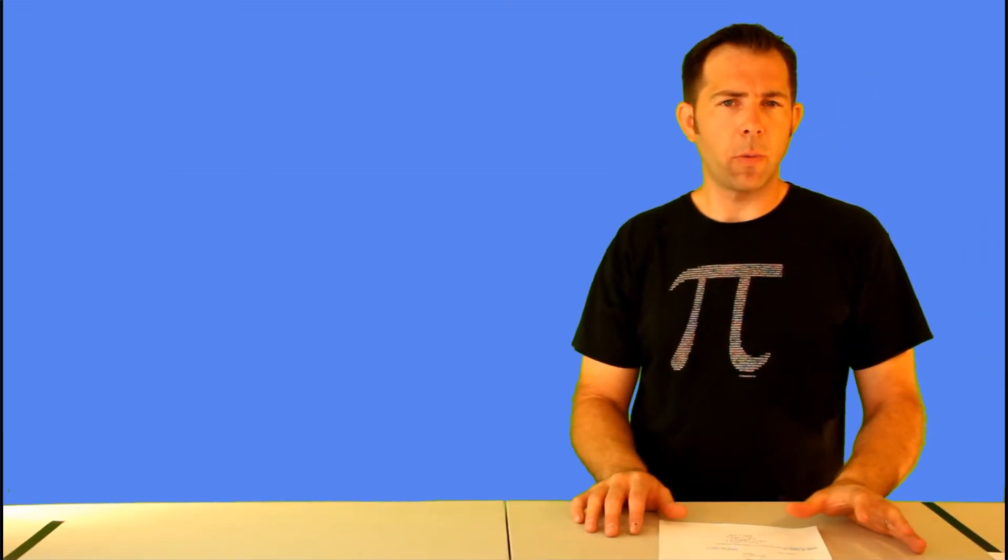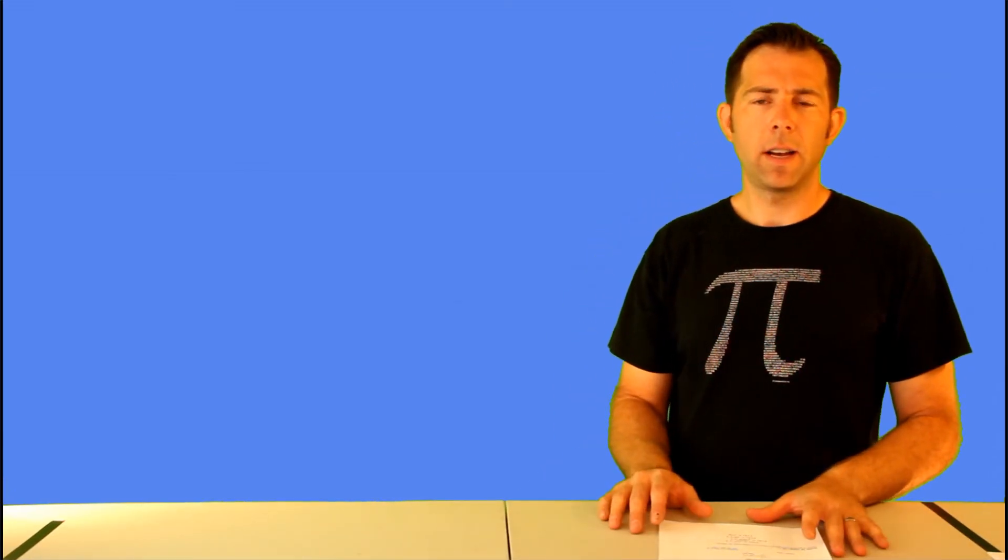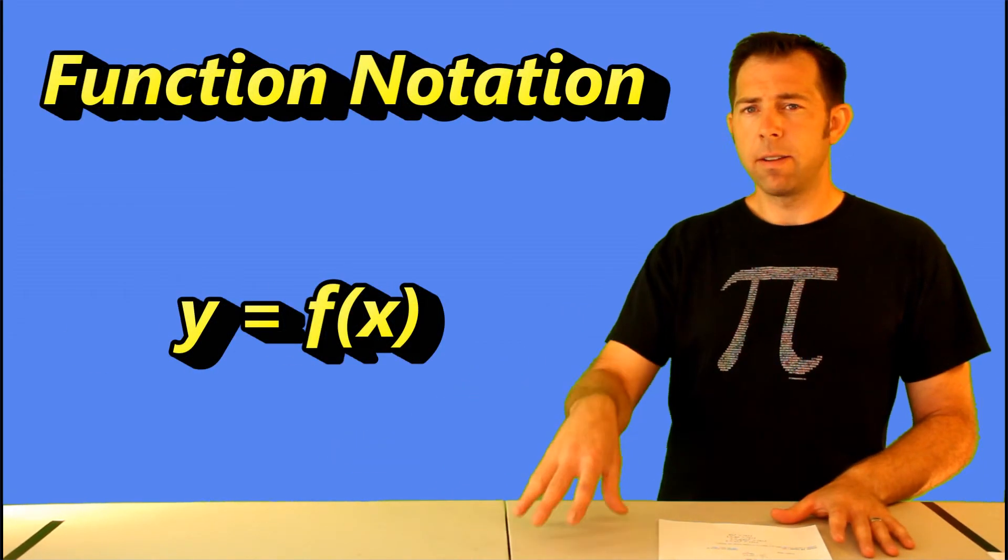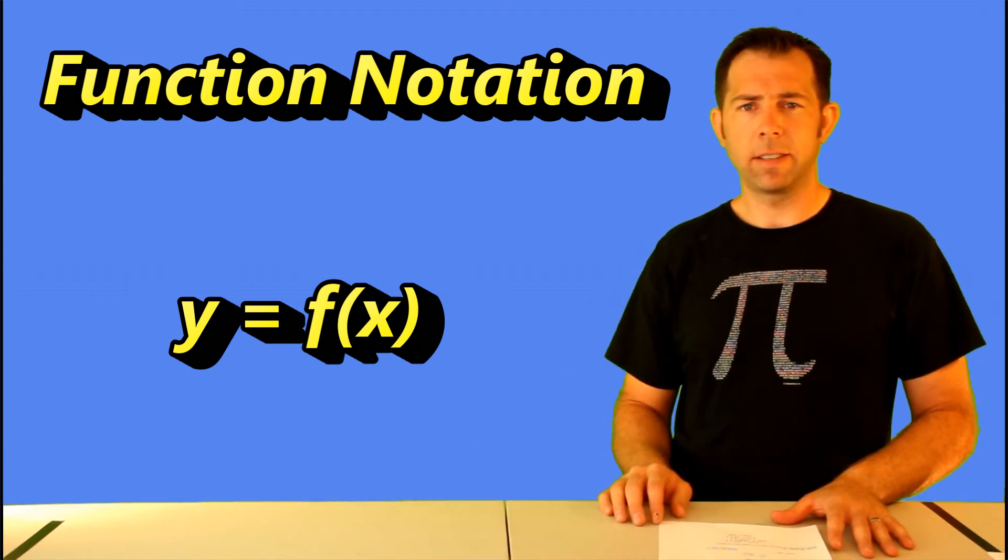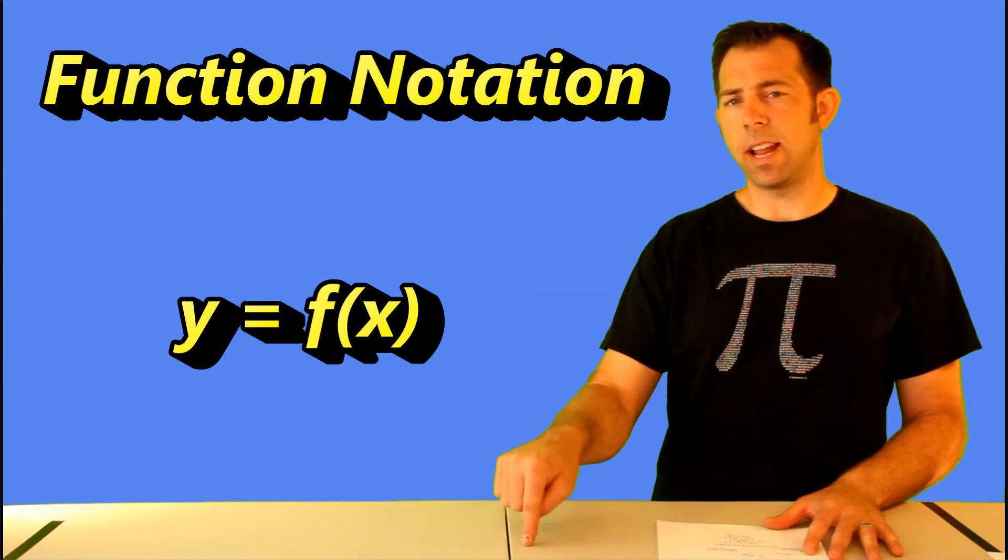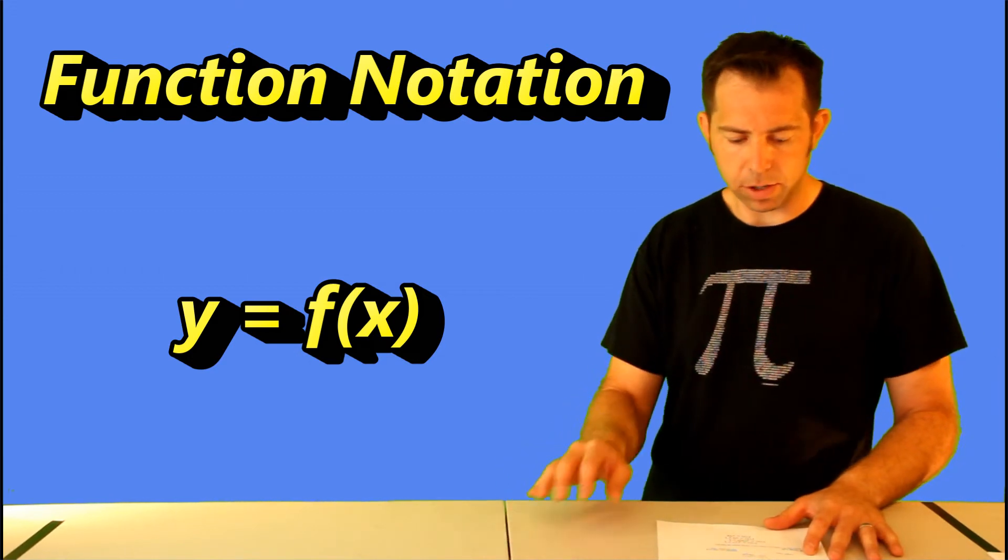So when we're dealing with functions where the y-value is a function of x, it's a lot easier to use function notation. So instead of saying find the value of y when x is a number, we'll just say find f of x. So f of x represents the output where f is the name of the function and x is the input of the function.